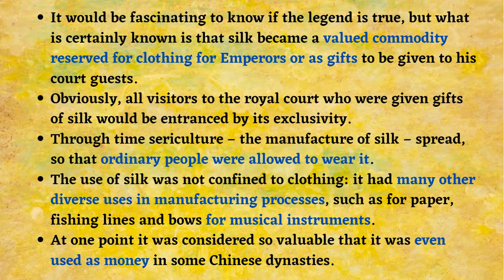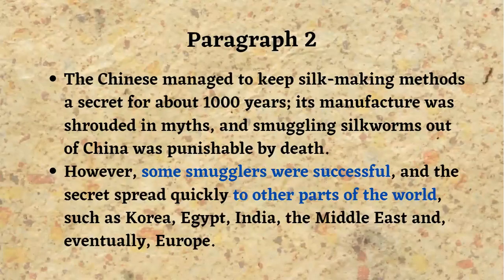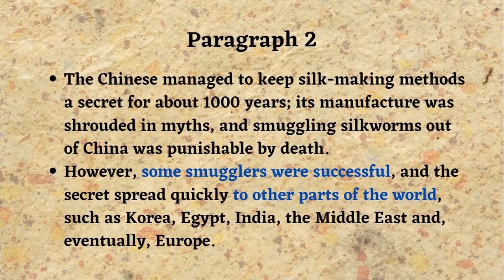Another content point: the use of silk was not confined to clothing. It had many diverse uses in manufacturing processes such as paper, fishing lines, and bows for musical instruments. At one point it was considered so valuable that it was even used as money in some Chinese dynasties.